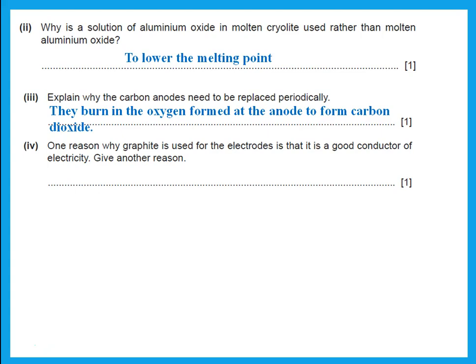One reason why graphite is used for the electrodes is that it is a good conductor of electricity. Give another reason why we use graphite — because it is inert, or unreactive.